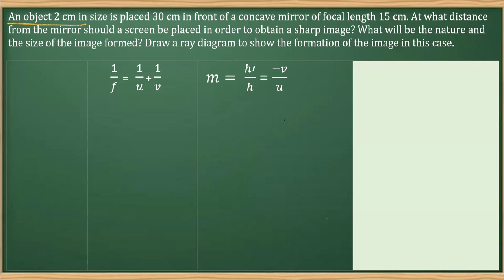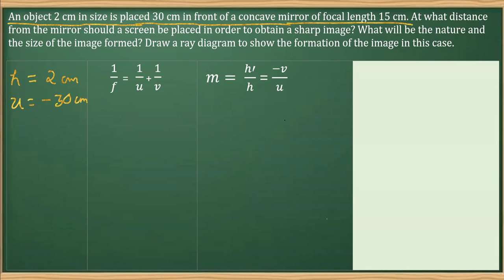In this question, it says an object which is 2 centimeters in size, so the height h is 2 centimeters. It is placed at a distance of 30 centimeters in front of a concave mirror. The object distance is indicated by u, and since the object is always placed on the left-hand side of the mirror, it is minus 30 centimeters.